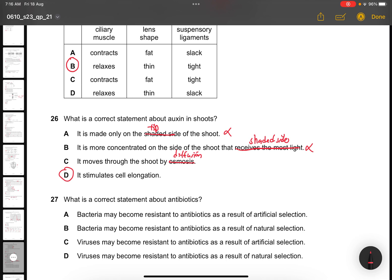Question 27. What is the correct statement about antibiotics? Antibiotics cannot treat viruses. So C and D will be out. Bacteria may become resistant to antibiotics as a result of artificial selection? No, artificial selection has to be from humans. So the answer is B.